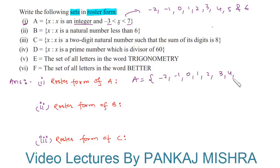We will write set A in roster form as A = {-2, -1, 0, 1, 2, 3, 4, 5, 6}. Let us see the next section. Set B is equal to x such that x is a natural number less than 6. Natural numbers less than 6 are 1, 2, 3, 4, 5.